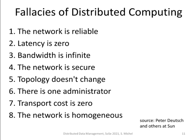Because it fits thematically, here are the so-called fallacies of distributed computing according to Peter Deutsch and others at Sun. For instance, you would assume that the network is reliable, but it isn't. You would assume latency is zero, but there's always latency to deal with. You don't have infinite bandwidth, and so on. This is an overview to make you aware that when going distributed, there are additional aspects to consider compared to centralized computing.